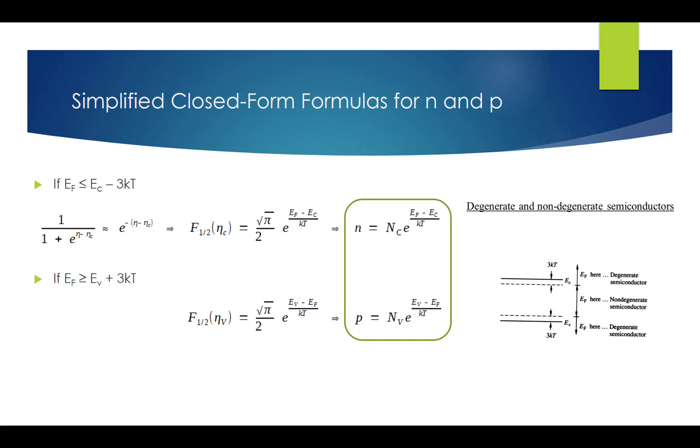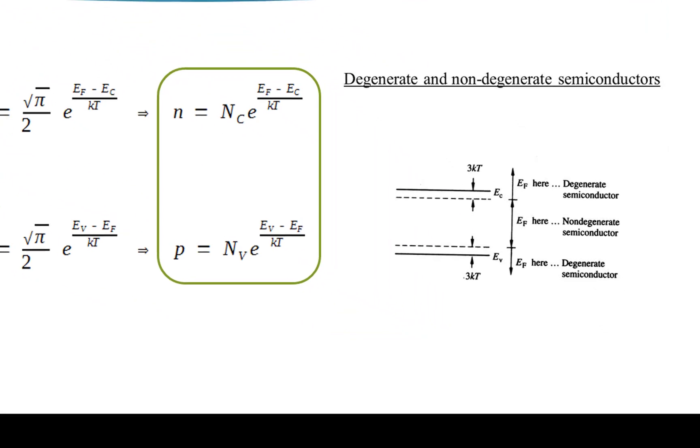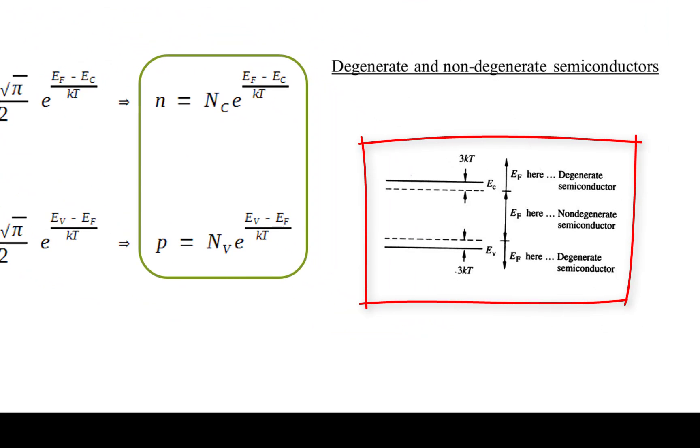Thus, for E_F between E_V plus 3kT and E_C minus 3kT, both n and p can be simplified as listed in the green box. Whenever E_F is confined within this range, the semiconductor is said to be non-degenerate.